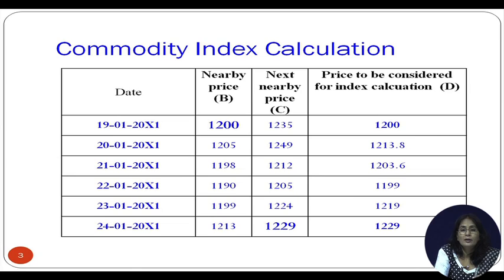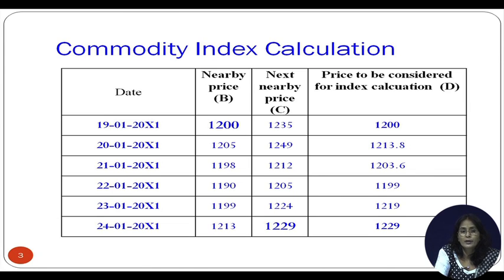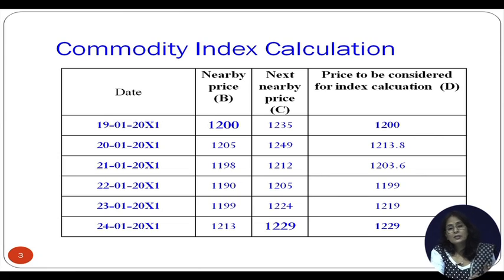The price of each constituent futures contract is similarly calculated and multiplied by its respective weight to arrive at the index value. On 23rd January, we take 20% of 1199 and 80% of 1224. On 24th January 2001, which is the expiry date of the nearby contract, we no longer consider 1213; we consider 1229 — the price of the next nearby contract.